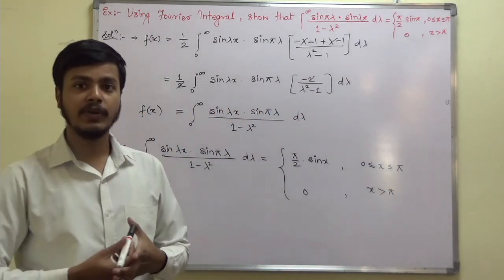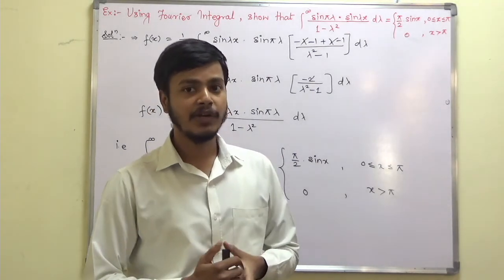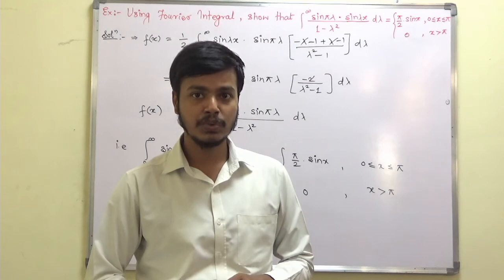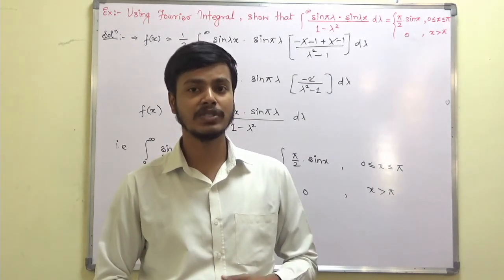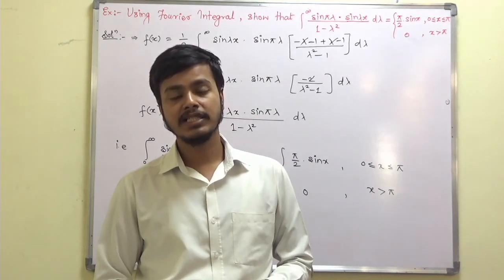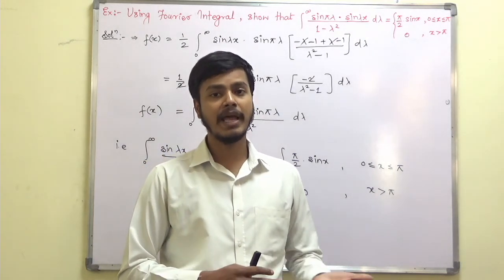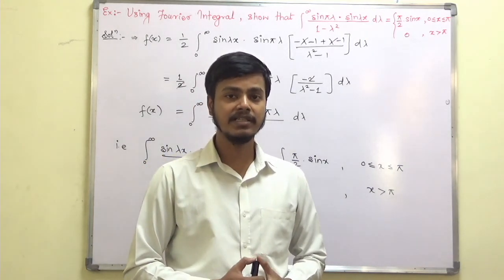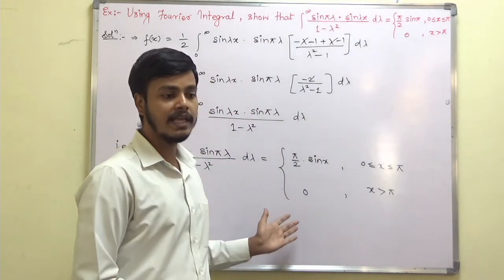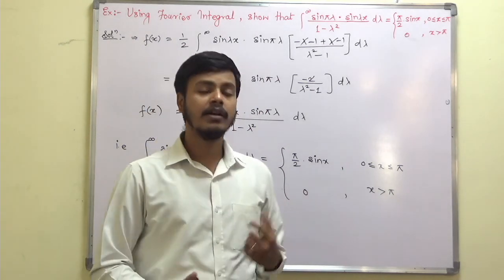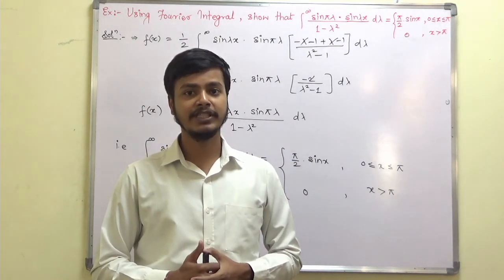I hope this problem is clear to you. You just need to take care of two things: the basic trigonometric formula 2 sin A sin B, and the pi-angle formulae sin(π − θ) and sin(π + θ). If you remember these, you can easily solve this problem. Thank you for watching this learning video and have a good day.